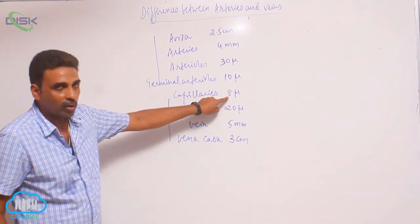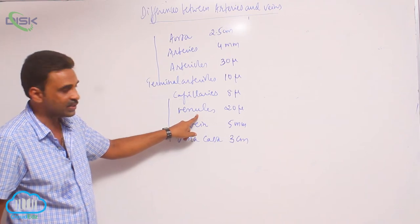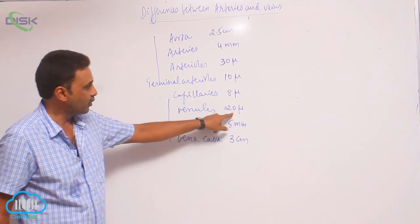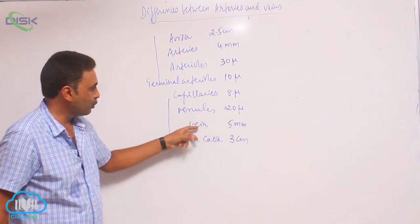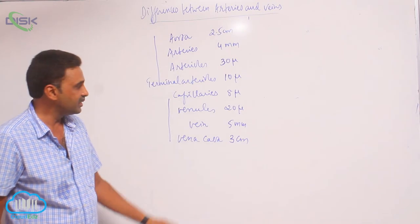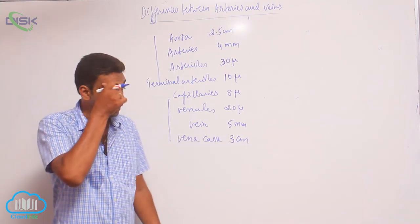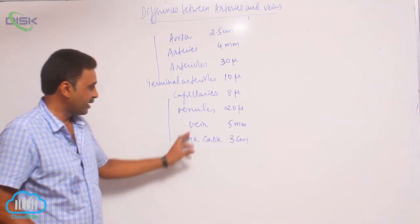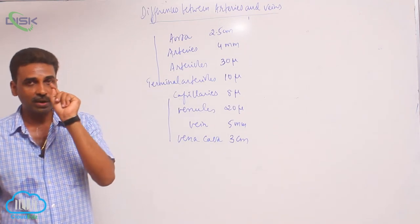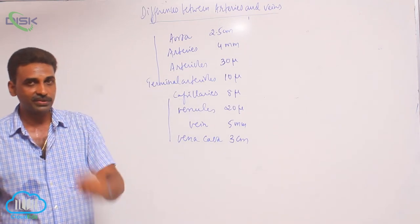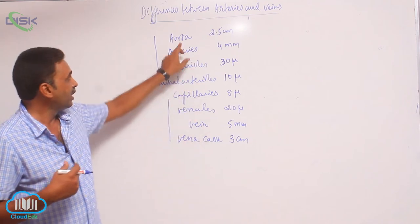Capillaries are around 8 microns in diameter; they open into venules around 20 microns. A group of venules combine together to form veins which are 5 millimeters in diameter, and all of them combine together to form the vena cava, which is around 3 centimeters in diameter, which directly opens into the right atrium.